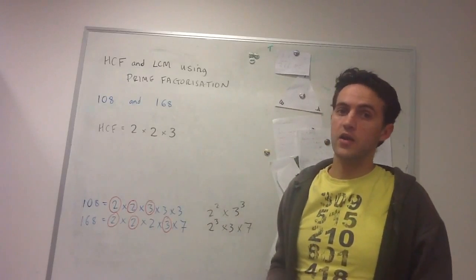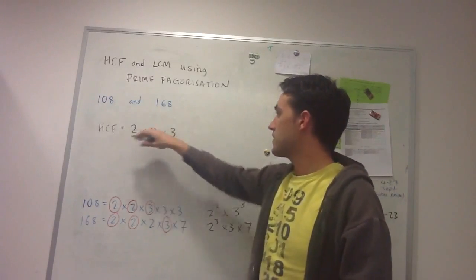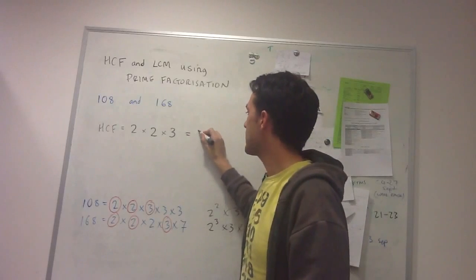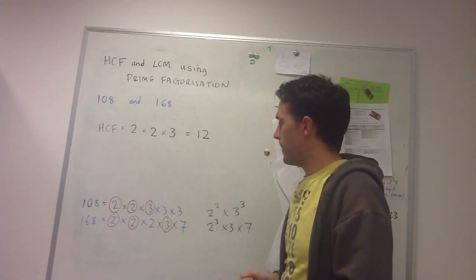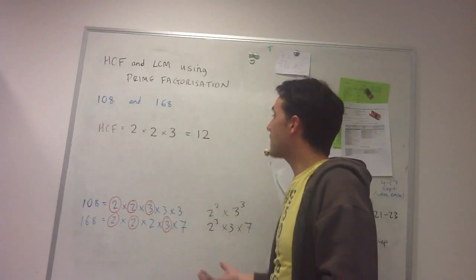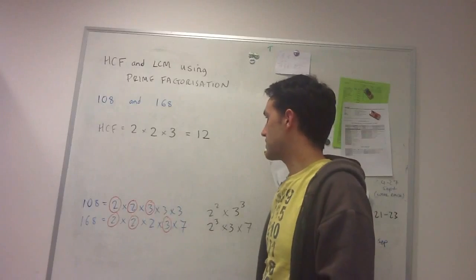And that's as far as I can go. So I can't make any more pairs, so this must be the highest common factor, and so the result is 12. There are no other numbers that would have their prime factorizations in both of these numbers.